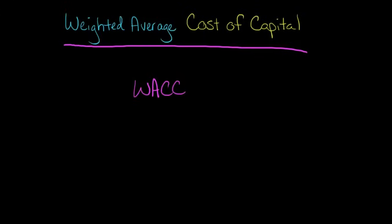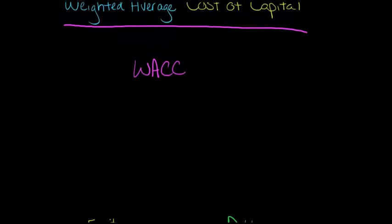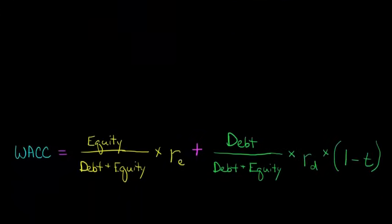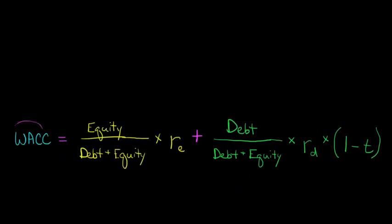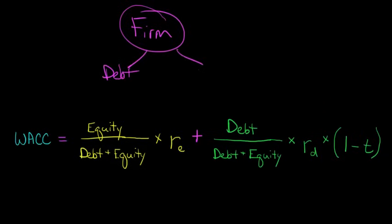So we're going to talk about what it is and how you would go about calculating it, and then we'll walk through an example. When we think about WACC, this Weighted Average Cost of Capital, really what we've got is the financing of the firm. So we've got a firm here. Now this firm is going to be financed from two primary sources. One is debt, and one is equity.